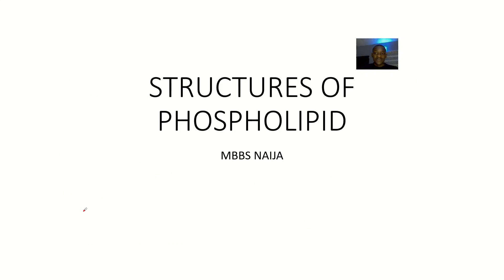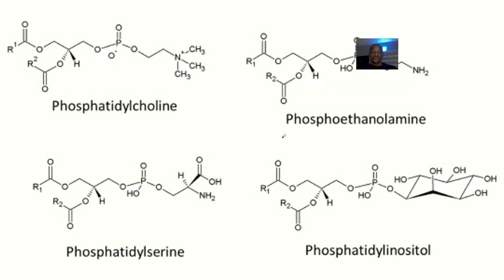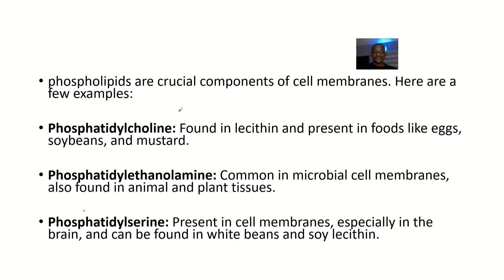Looking at the chemical structures, the next compound we're looking at is examples of phospholipids. In the exam, students were required to draw only one example of a phospholipid, but I brought three examples. These are the examples of phospholipids: phosphatidylcholine, phosphatidylethanolamine, and phosphatidylserine.